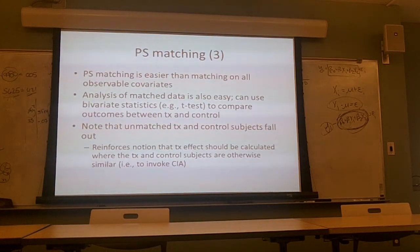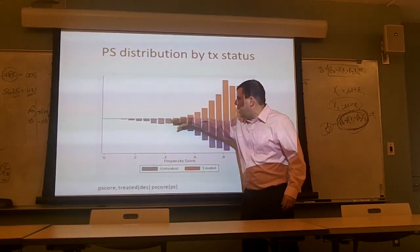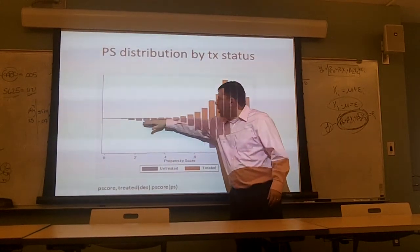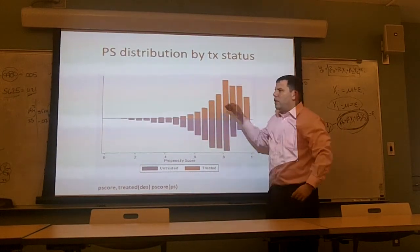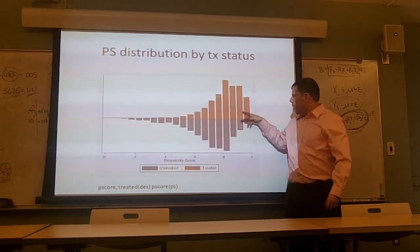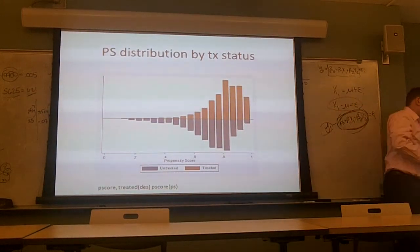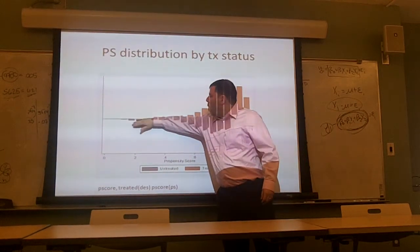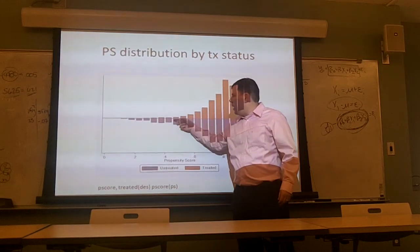Going back to the graph: for every red one there's only going to be an equal number of blue matches, say one-to-one or one-to-five depending on your choice. You'll be throwing out all the stuff where there's not equal size. You'd throw out treatments here because you don't have enough controls to match them, and you get sort of a minimum-distance match. A symmetric plot of the final sample would show symmetry within propensity score buckets.